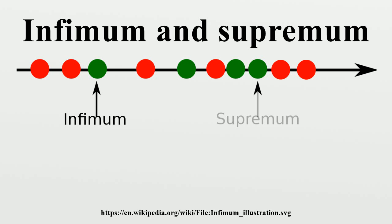An example of a set that lacks the least upper bound property is the set of rational numbers. Let S be the set of all rational numbers Q such that Q² < 2. Then S has an upper bound but no least upper bound. If we suppose P is the least upper bound, a contradiction is immediately deduced because between any two reals X and Y there exists some rational P, which itself would have to be the least upper bound or a member of S greater than P. Another example is the hyperreals — there is no least upper bound of the set of positive infinitesimals. There is a corresponding greatest lower bound property: an ordered set possesses the greatest lower bound property if and only if it also possesses the least upper bound property. The least upper bound of the set of lower bounds of a set is the greatest lower bound, and the greatest lower bound of the set of upper bounds of a set is the least upper bound of the set.